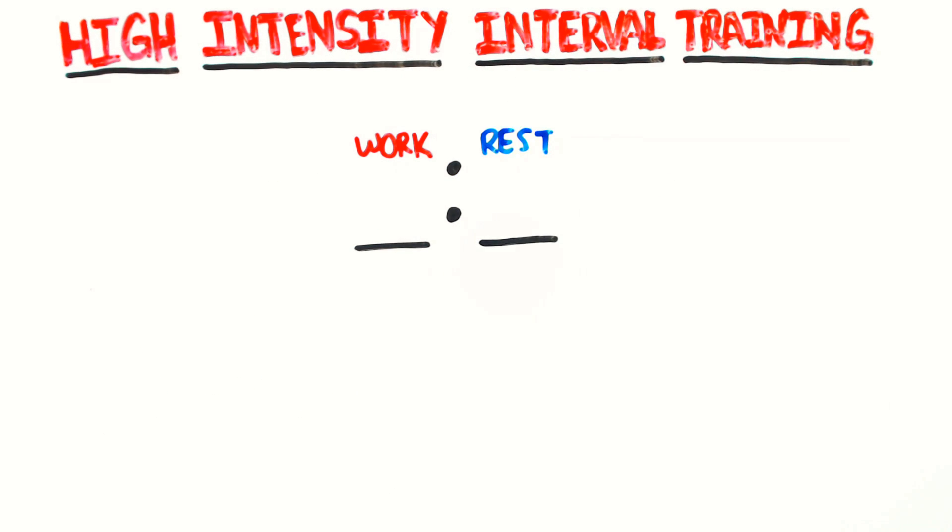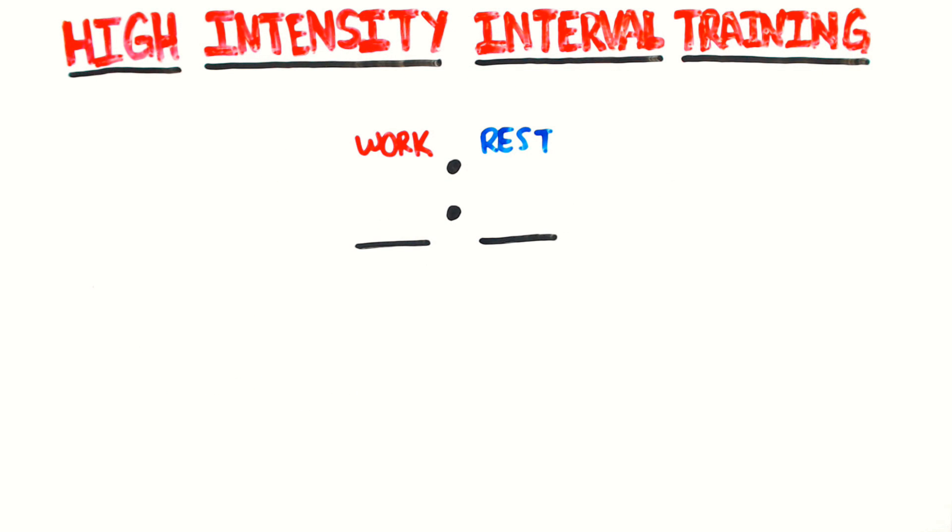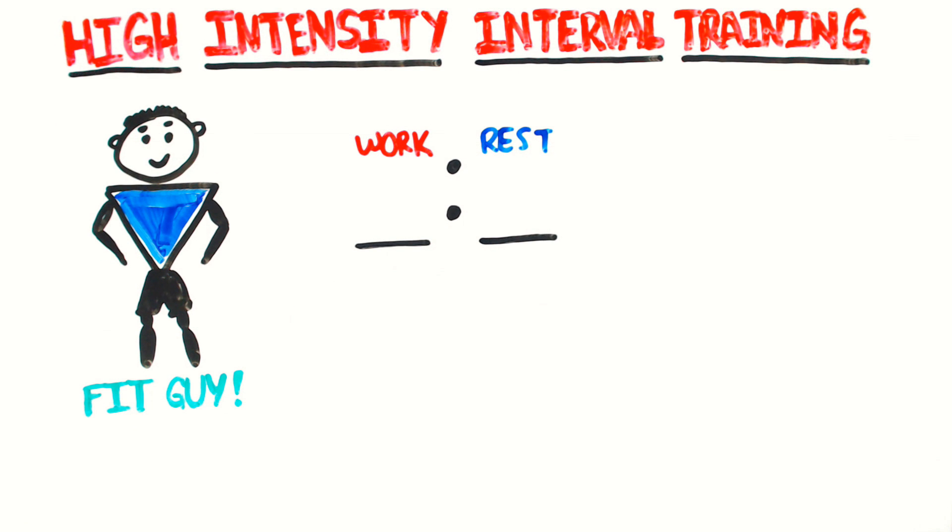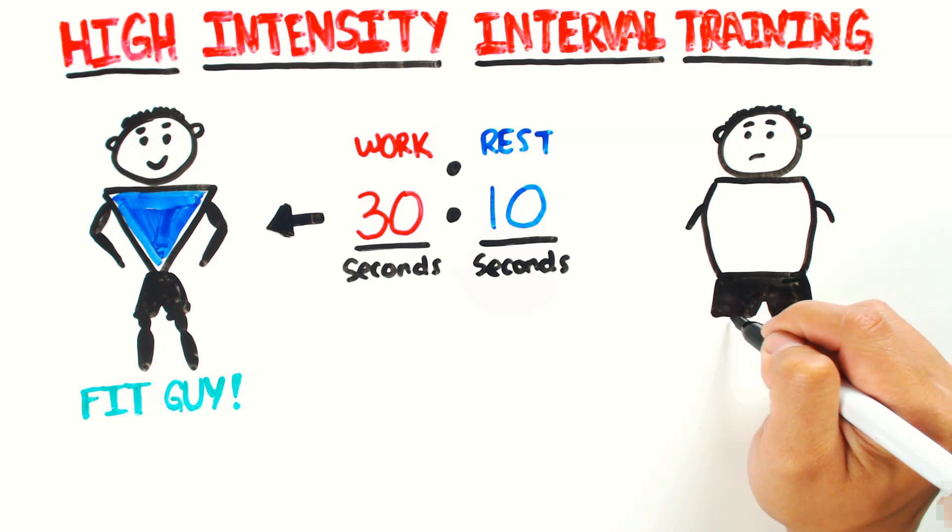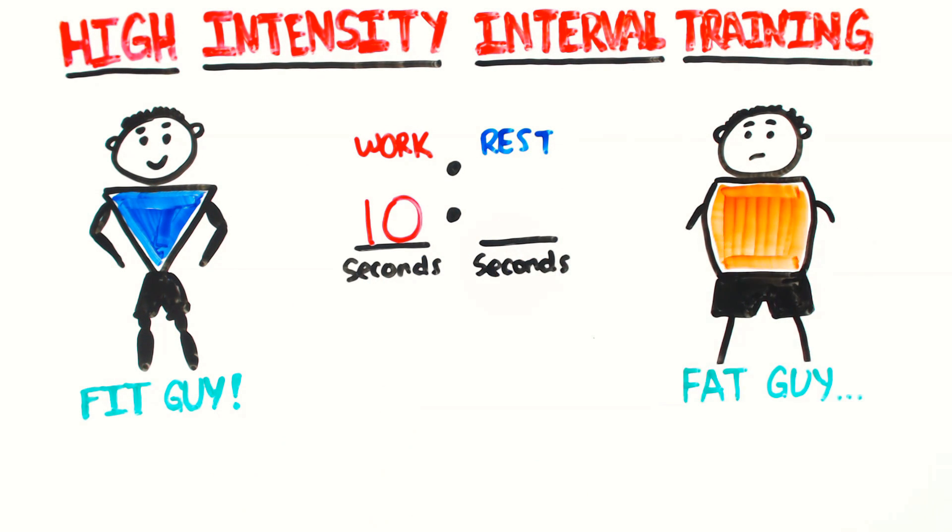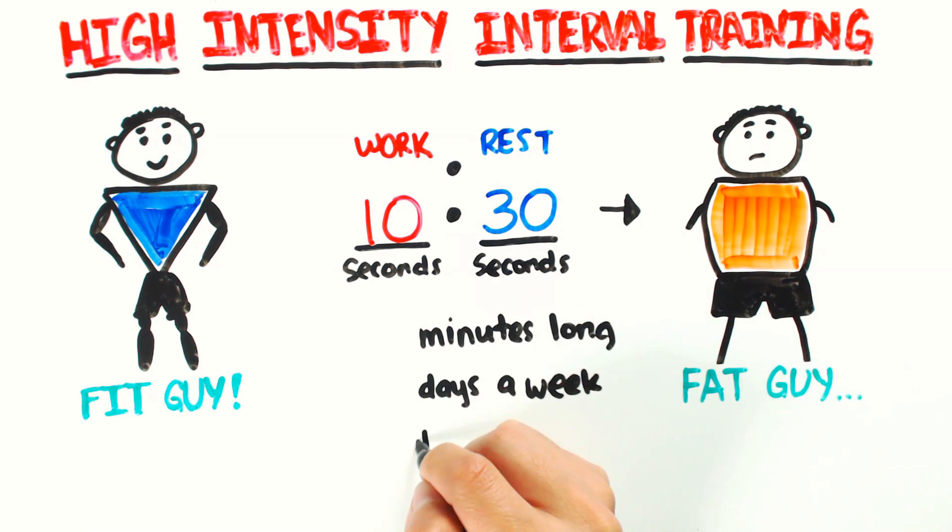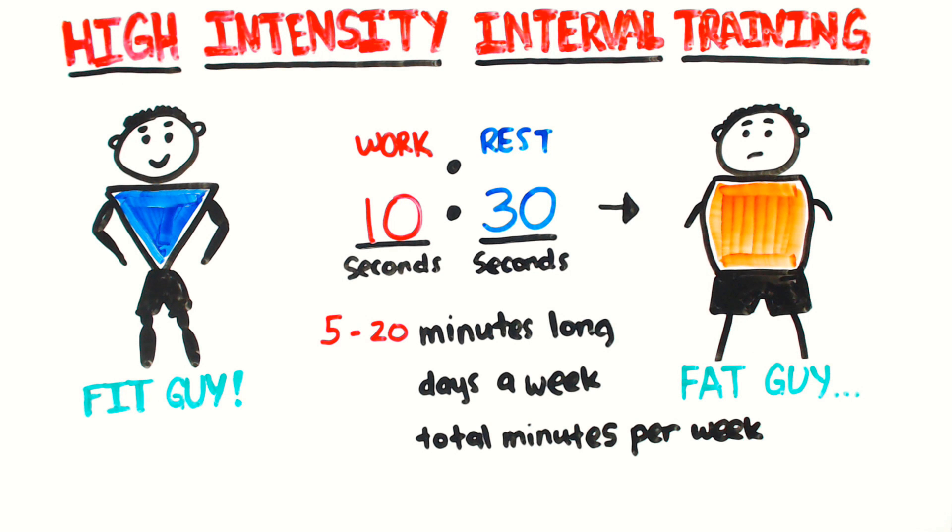The more fit you are, the higher the work-to-rest ratio will become. For example, if you're really fit, you might be sprinting for 30 seconds and walking for 10. Someone that is less fit might be only sprinting for 10 seconds and walking for 30. The total session length varies between 5 to 20 minutes, and because of the intensity, should only be done 3 days a week.